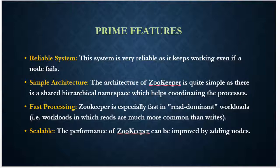Now we'll discuss the prime features. The first prime feature is a reliable system. This system is very reliable as it keeps working even if a node fails — that's one of the best things about Apache Zookeeper. Next is simple architecture: the architecture of Zookeeper is quite simple, as there is a shared hierarchical namespace which helps coordinate the processes. Then there is fast processing — Apache Zookeeper is especially fast in read-dominant workloads, that is workloads in which reads are much more common than write operations.